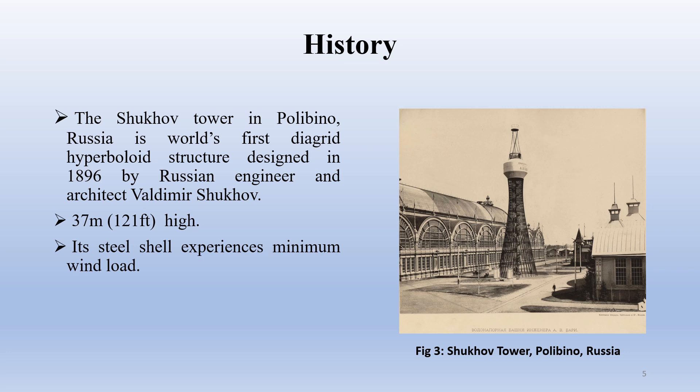The world's first Diagrid Hyperboloid Structure was designed in 1896 by Russian engineer and architect Vladimir Shukhov. He designed the Shukhov tower in Polibino, Russia — a 37-metre steel diagrid tower which became the first hyperboloid structure in the world. Its steel cell experienced minimum wind load. Similar hyperboloid structures appeared abroad only after 10 years of Shukhov's invention.